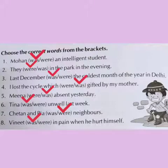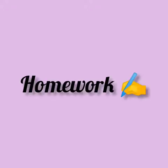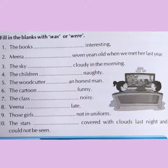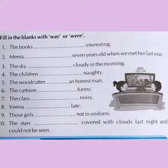So students, with singular subject we will use was, and with plural subject we will use were in past tense. Fill in the blanks with was or were. Students, you have to fill these blanks with was or were. First read the sentences and focus on the subject. If the subject is singular, use was. If the subject is plural, use were.